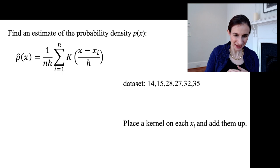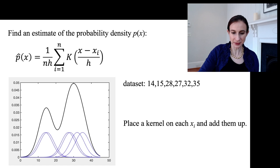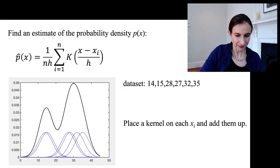You just place a kernel on each xi and add them up. So here's my data set. It happens to be six points. I'm going to just place a kernel on each data point and add it up. And it looks like that. The kernels are in blue, and when I added it up, it was in black. You can see that there's a higher density region kind of closer to the right.